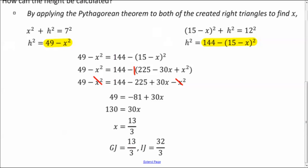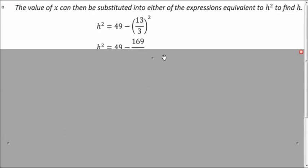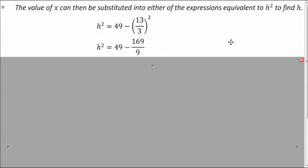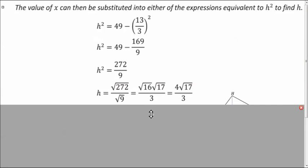And so now how can we figure out what the height is? Well, we have this nice equation over here for h squared. So let's plug in for x and then simplify that and take the square root so we can figure out what h is. So when we substitute, we end up with 49 minus 169 over 9, which gives us h squared equal to 272 over 9. So we take the square root of both sides there. And we end up with this fraction. And 16 is a perfect square factor of 272. And the square root of 16 is 4. So we get 4 square root of 17 over 3.